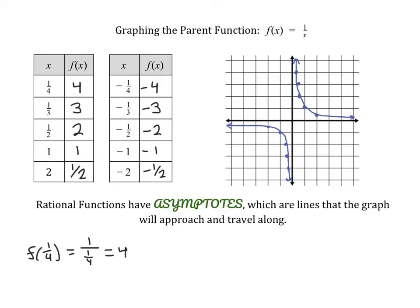Rational functions have what are called asymptotes. Asymptotes are lines that your graph will approach and travel along as you reach different values. By looking at our graph, you can see we have a horizontal asymptote at y equals 0 and a vertical asymptote at x equals 0. These are lines that your graph will get really, really close to but will never actually quite touch.